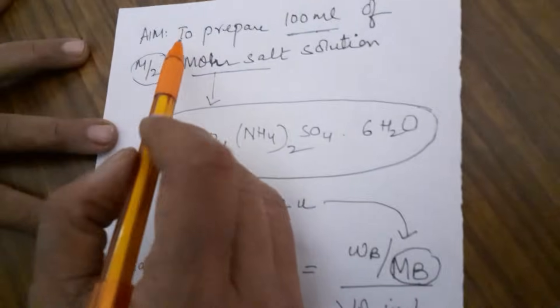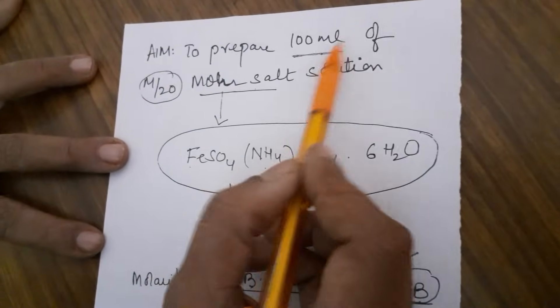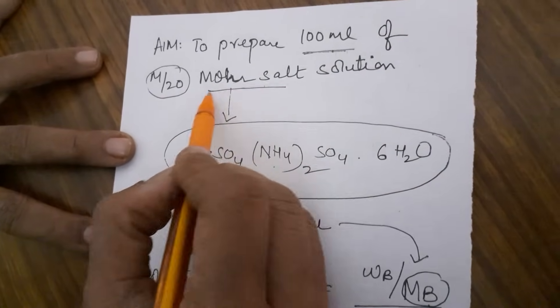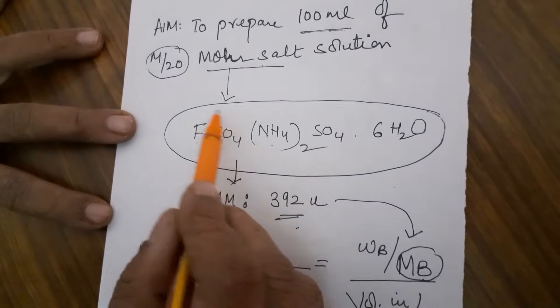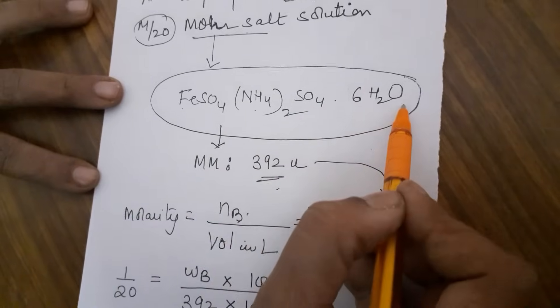I am doing the preparation of 100 ml because we have a vessel of 100 ml - 100 ml of M by 20 Mohr salt solution. Now what is this Mohr salt? Mohr salt formula has ferrous sulfate, ammonium sulfate with 6 water molecules.